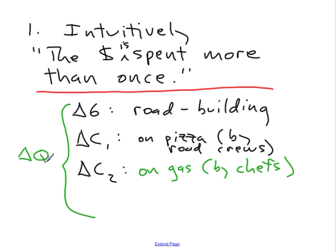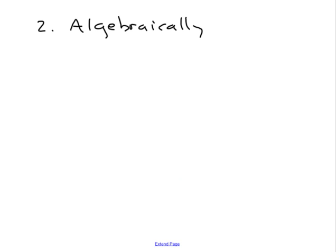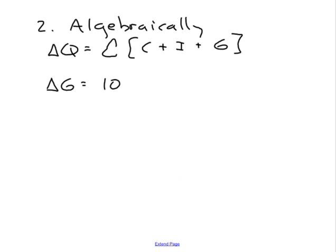Now, to look at it more precisely, we can look at it algebraically and say the increase in output is equal to the total increase in C plus I plus G. And so what we have is an increase in G of $10 billion.